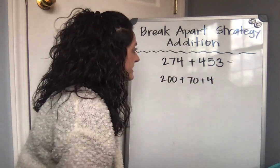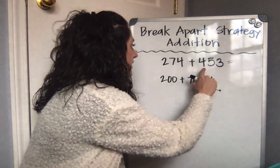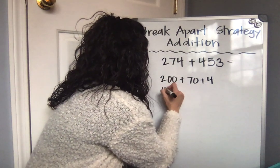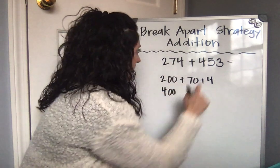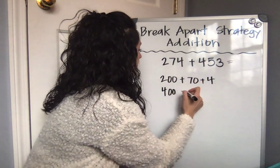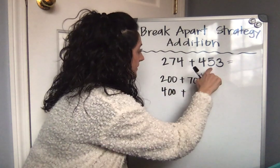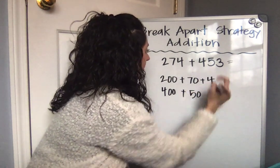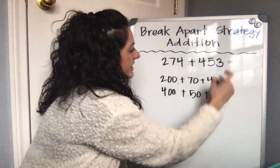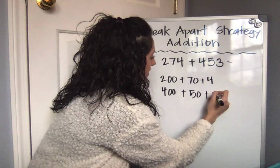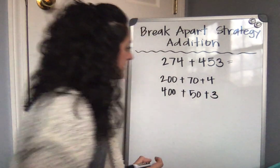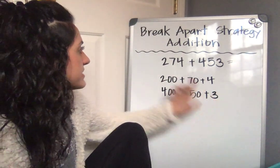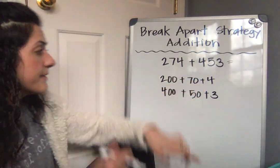Then I'm going to look at my second number. I see four hundreds in the hundreds place — four hundreds is equivalent to 400. Then I look at the tens place: five tens, I know that's 50. I look at the ones place and I know that there are three ones. So I have 400 plus 50 plus three, or 453.